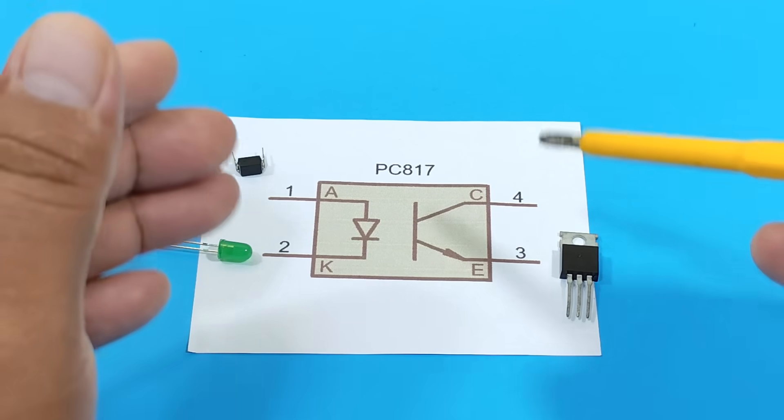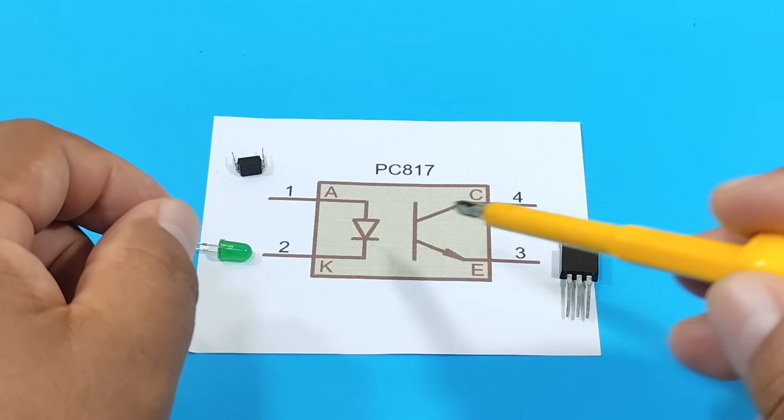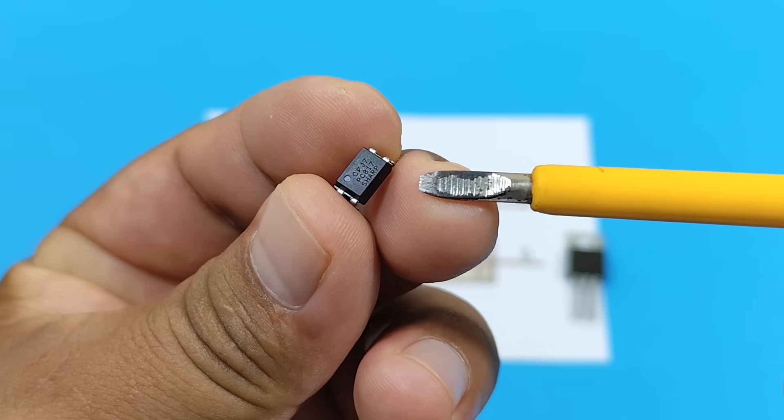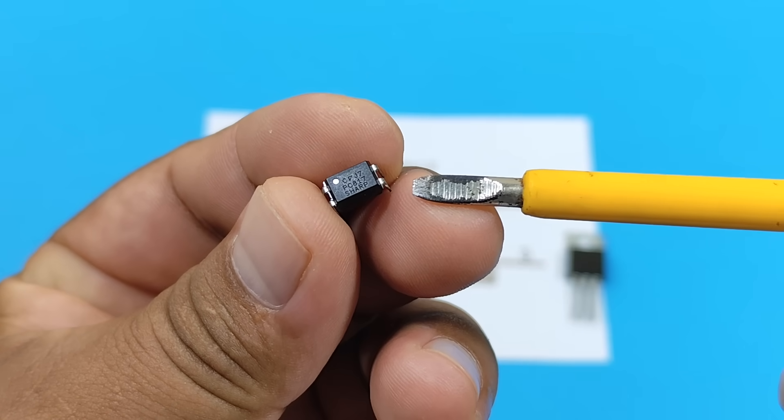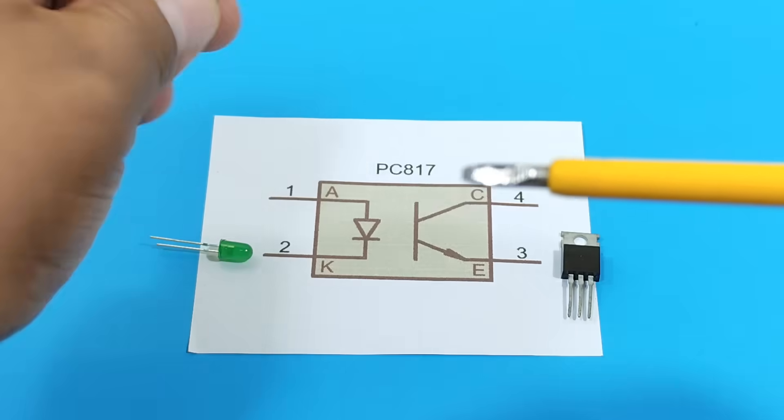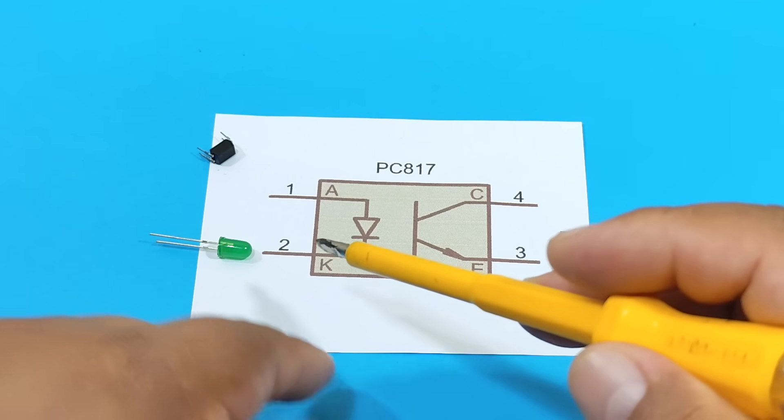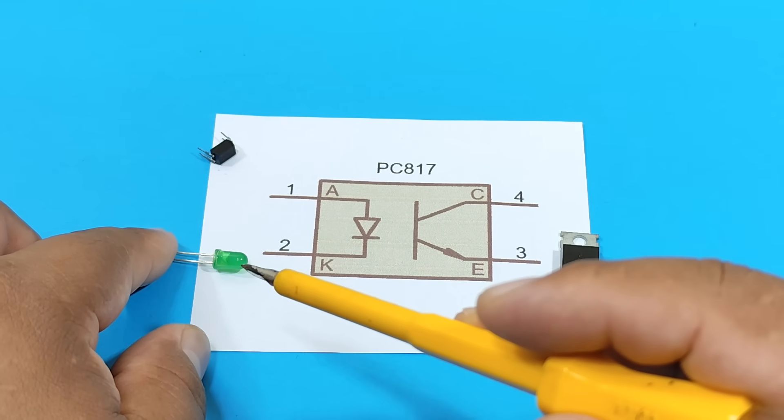Alright, now let's explain how an optocoupler works. Inside this package, we have two separate components. As you can see here, on one side, we have an LED, like this one.